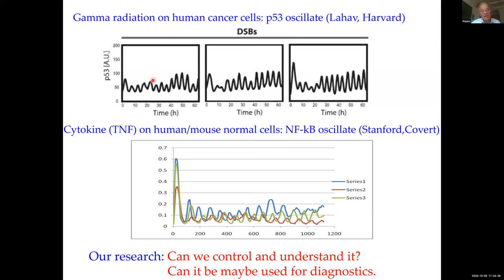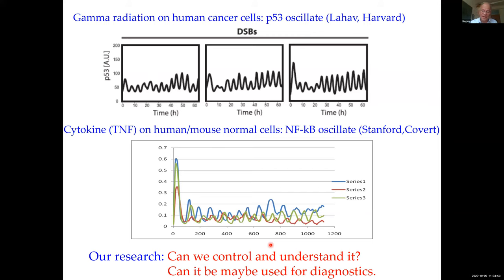Of course, not as beautiful as a pendulum — there is noise inside cells. And here I show data from Markus Covert at Stanford: you put TNF, a cytokine, onto normal mouse and human cells, and you see the transcription factor NF-κB also oscillates over almost a day. Our question for the last five years has been: can we control and understand it, and maybe even use it for diagnostics?